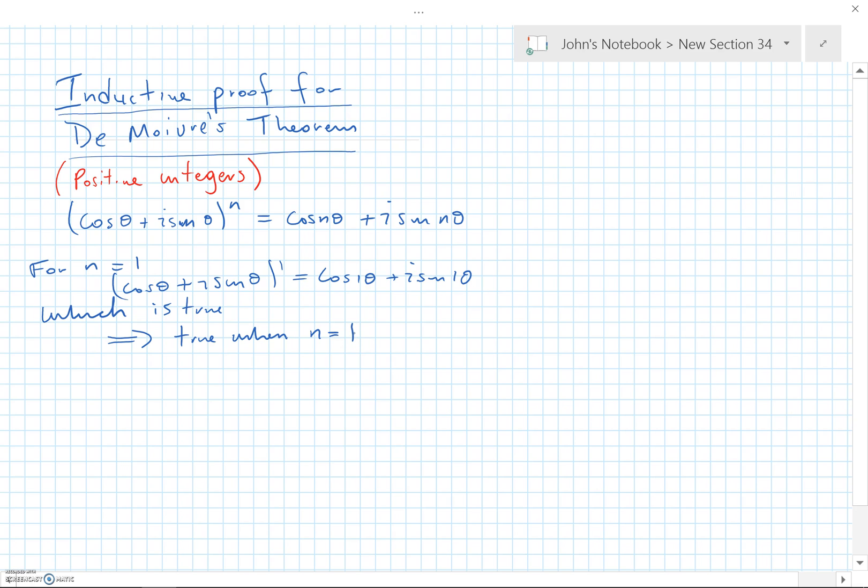Okay, so it's true for n equals 1. So now what we want to do is assume it's true. Now we make this assumption. I do like induction, it's so intuitive, so nice. So we assume it's true for n equals k, i.e. that cos theta plus i sine theta to the k is equal to cos k theta plus i sine k theta.